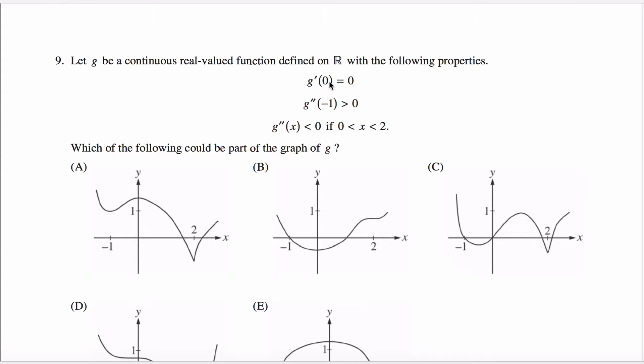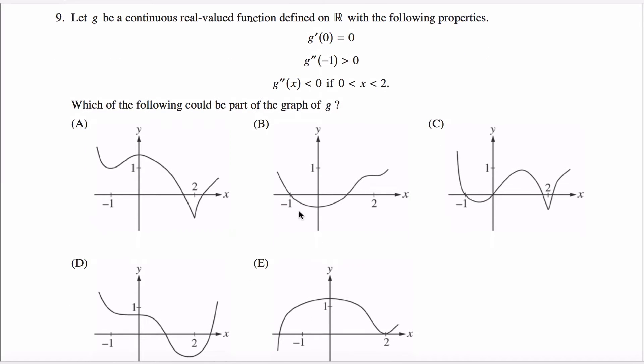Its derivative at zero is equal to zero. Its second derivative at negative one is a positive number, and its second derivative is less than zero anytime x is between zero and two. Okay, and you're asked which of the following could be part of the graph of g.